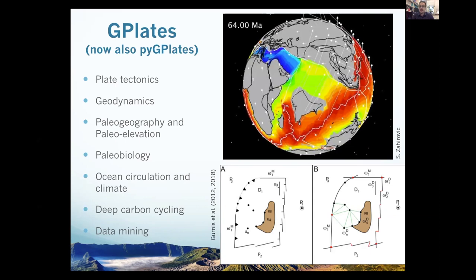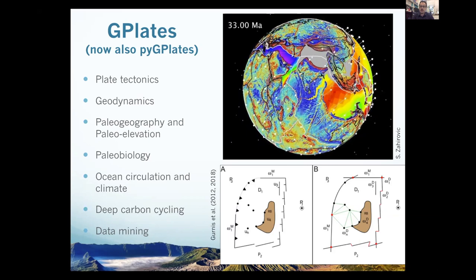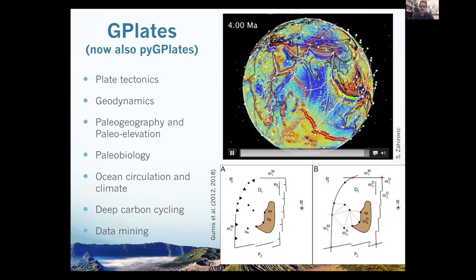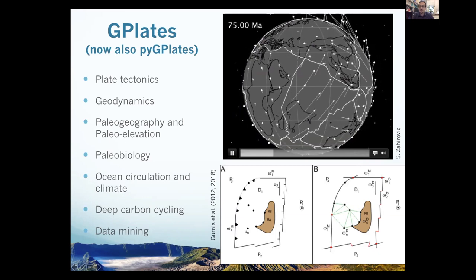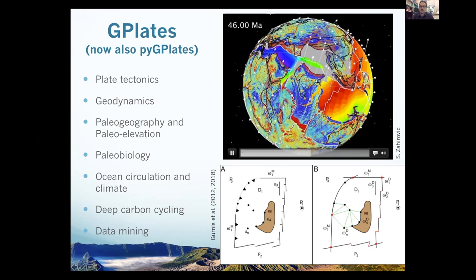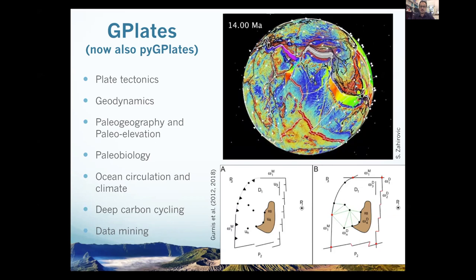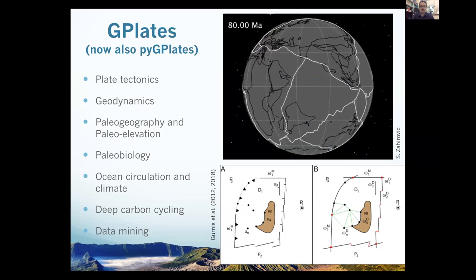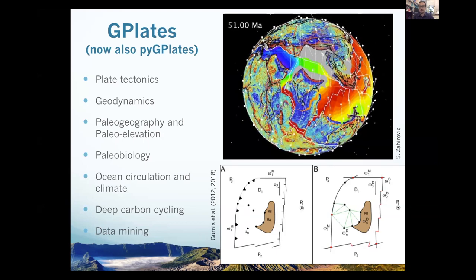The novelty in G-plates came about when we started building reconstructions and realizing that we needed a formal way of capturing the evolution of plate boundaries and these plate topologies. You can see here on the right in this animation — the white lines represent the plate boundaries, and their interlocking mosaic of networks creates these plate topologies. We can sample the plate velocities and link these models to numerical mantle flow simulations, and many of these models have also been linked to ocean circulation climate modeling and other applications.